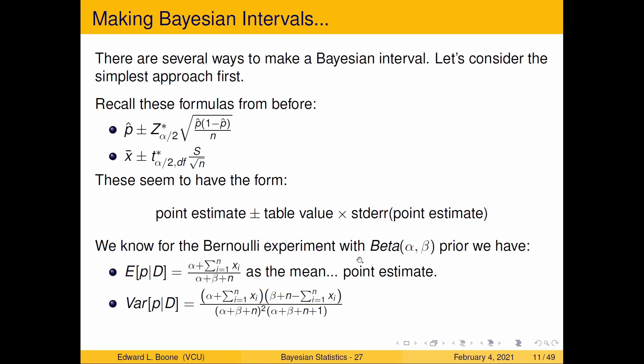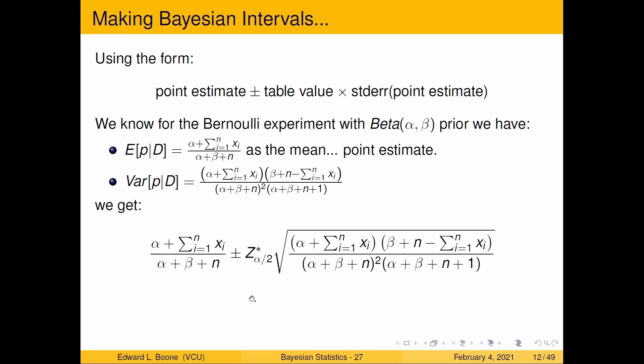We know for the beta experiment if we have a Beta(α, β) prior we have here's our posterior mean so that would be the point estimate and we have our posterior variance which could be our standard error here if we take the square root of it. So we can create a formula here that resembles or mimics how a frequentist would work. They would take this ± a table value, I'm just using z because it's simple at the moment, and here is my standard error with the square root or this is substituting for it.